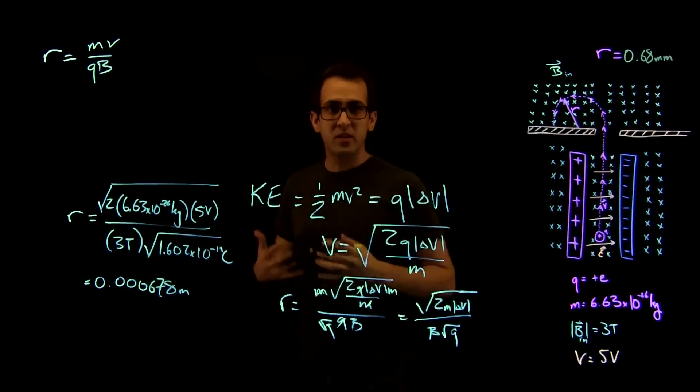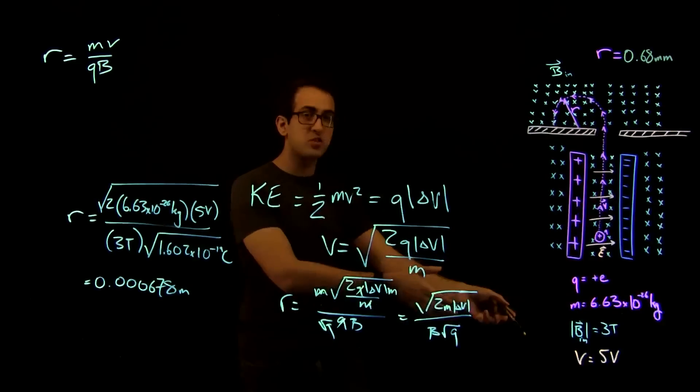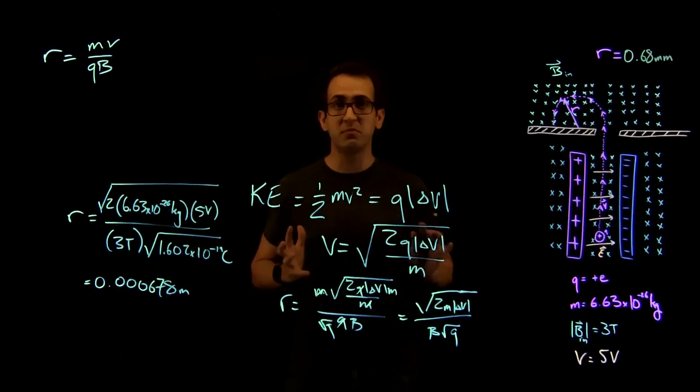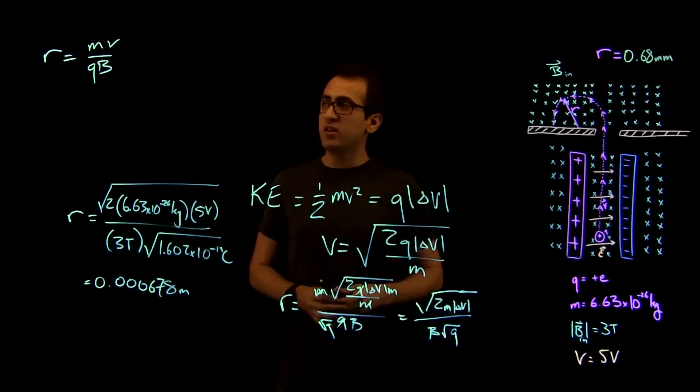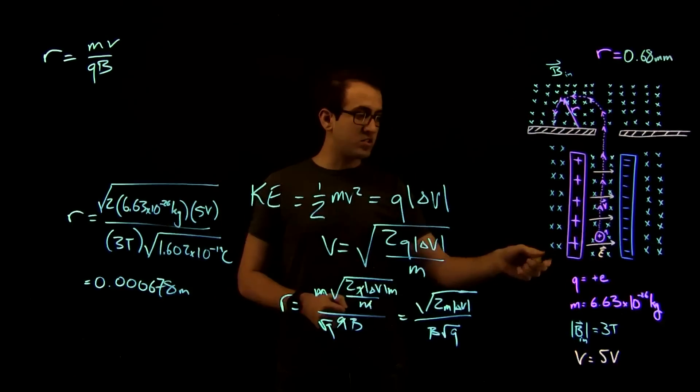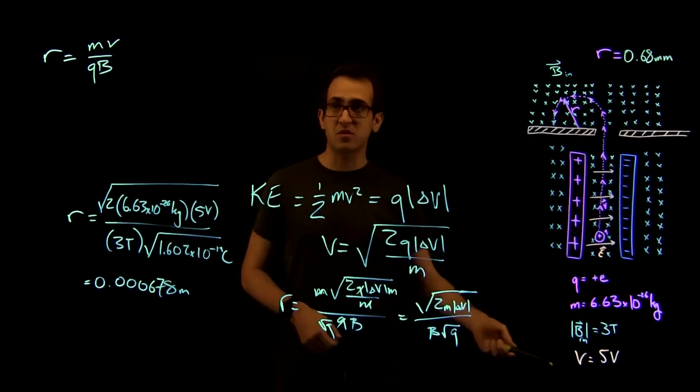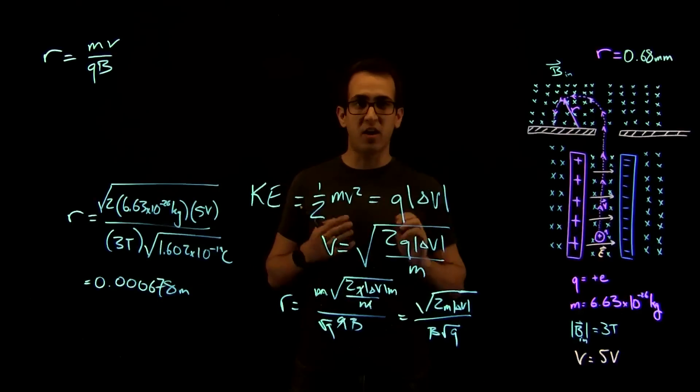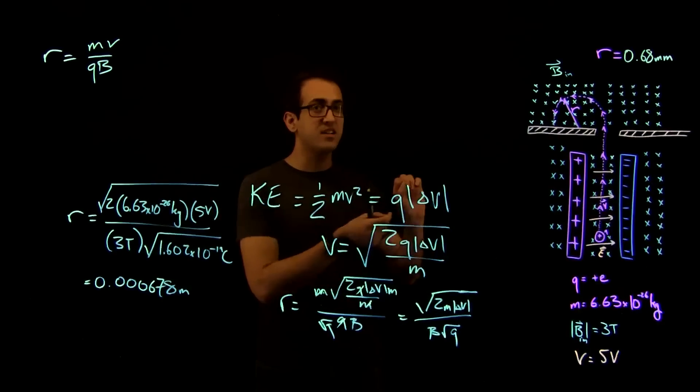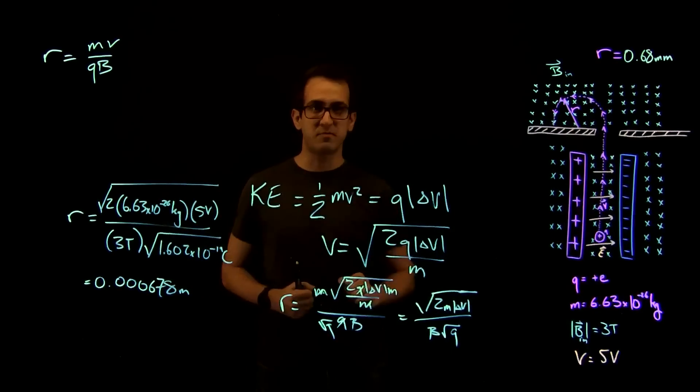And there you go. Using the energy from the voltage the argon was accelerated through, assuming no initial voltage in that direction, it passed through the voltage selector and curved around. Using only the mass, the charge, the magnetic field, and the potential it accelerated through, we were able to find the radius of curvature of that argon atom, that singly ionized argon atom inside a mass spectrometer.